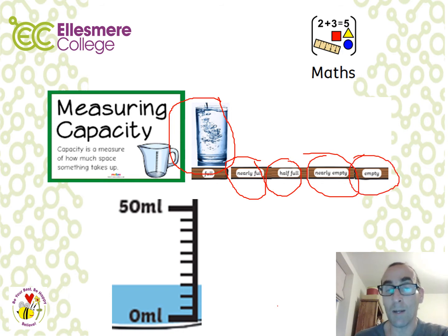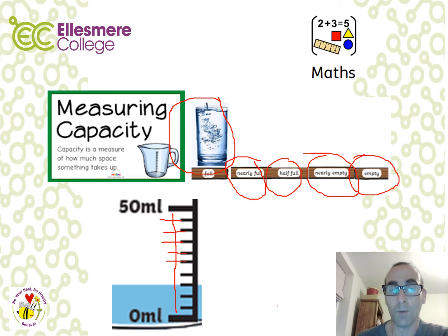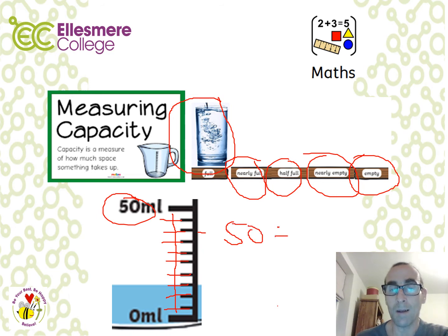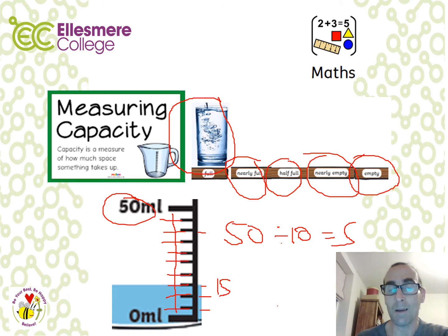In lesson two we're going to be specifically looking at measuring capacity and using scales. It's really important when we use scales that we look first at the marks on our scale and work out how much each of those marks is worth. In this example there are ten lines from zero up to 50. So to get each line you need to do 50 divided by 10, which equals 5. So each line is worth 5 — giving us 5, 10, 15, and so on — allowing us to work out the capacity of the liquid in any container.